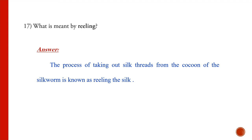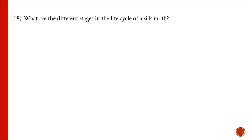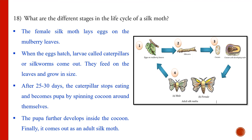Reeling is the process of taking out the silk threads from the cocoon of the silkworm, usually done with the help of machines. The stages in the life cycle of a silk moth: the female lays eggs on mulberry leaves; eggs hatch into larvae called caterpillars or silkworms; they feed on mulberry leaves and grow; after 25 to 30 days they stop eating, wrap themselves in a cocoon as pupae, develop inside, and finally emerge as adult silk moths.